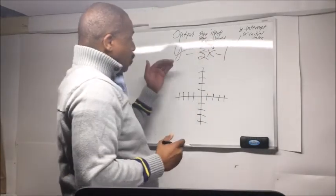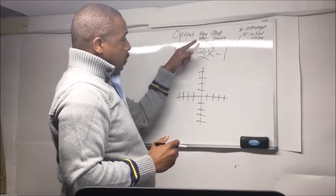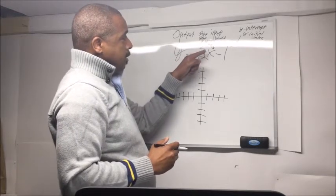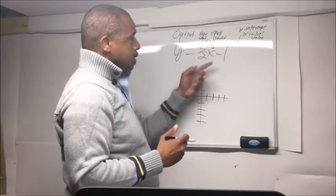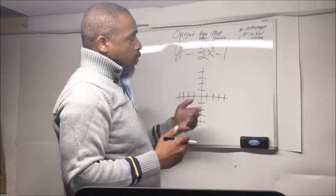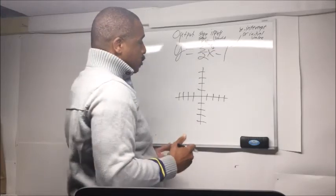So y equals the slope, the rate of change, times the input or variable, the thing that does change, minus 1, which is the y-intercept or initial value.